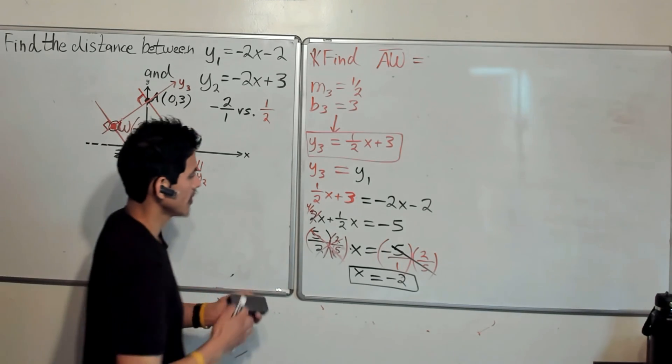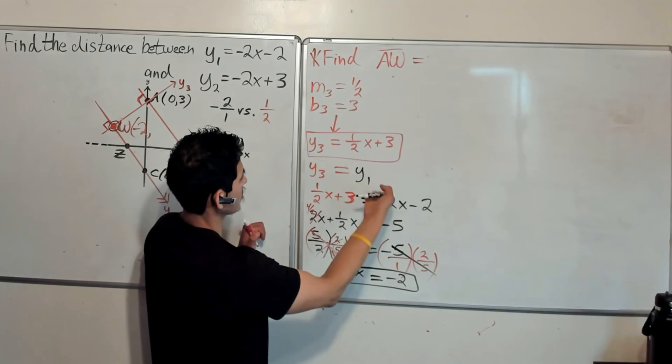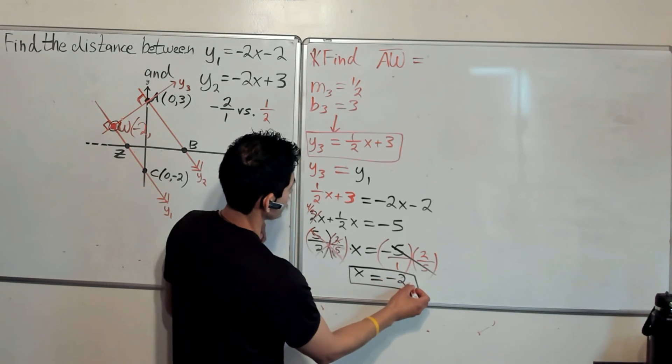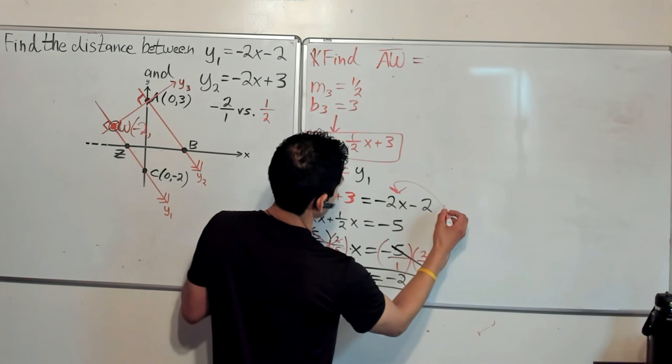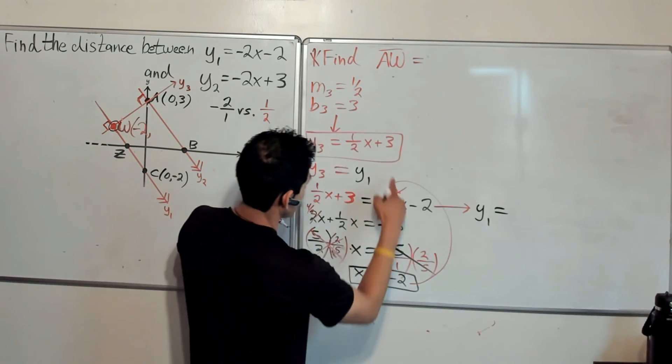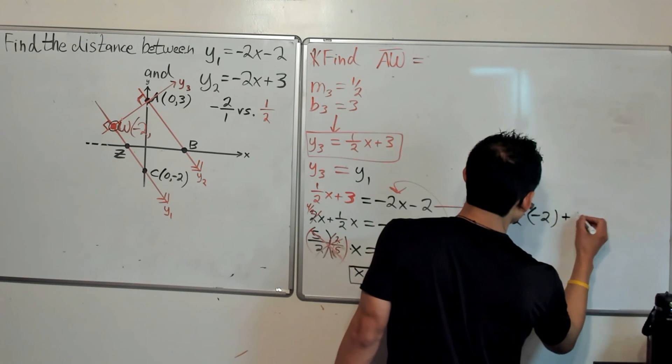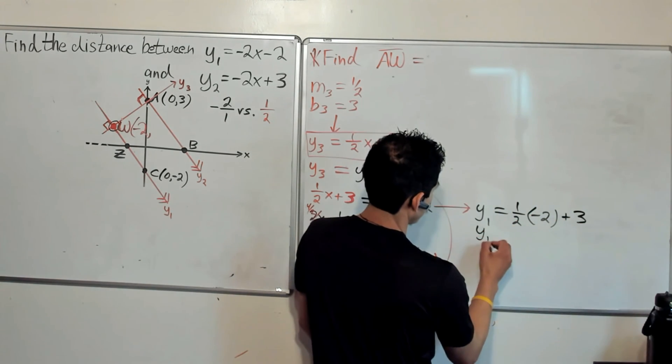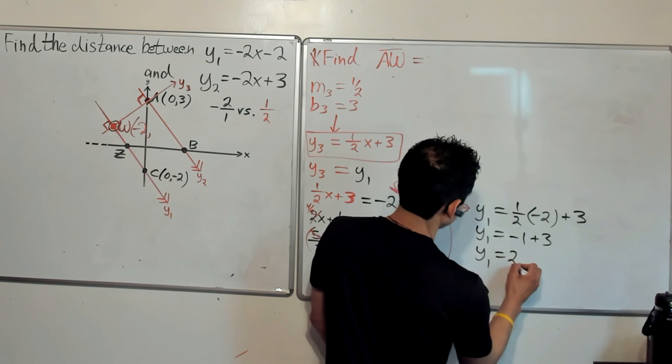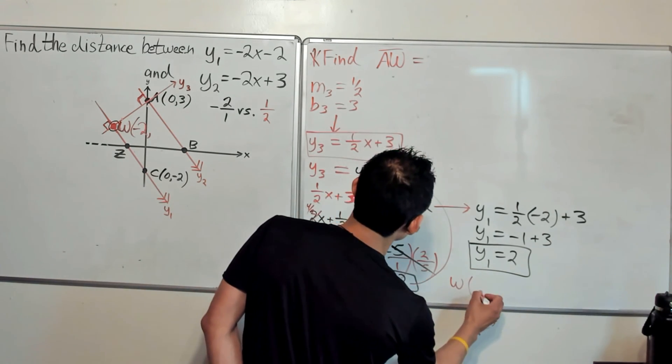So now we have to find y. To find y, we're going to plug negative 2 into either y3 or y1, doesn't matter, looks like y1 will be easier. So plugging negative 2 into here and solving for y, we'll get the y1 is equal to 1 half times negative 2 plus 3, and this will be negative 1 plus 3, which is just 2. And so then point W is going to be at negative 2, 2.